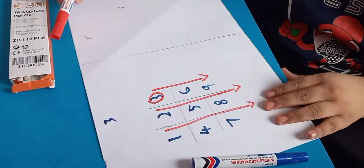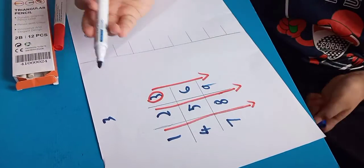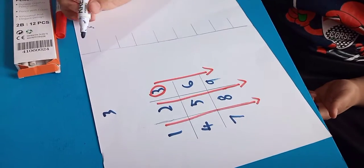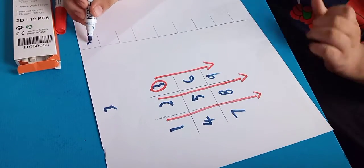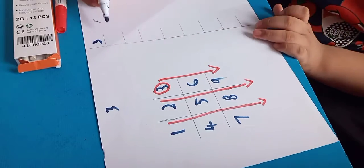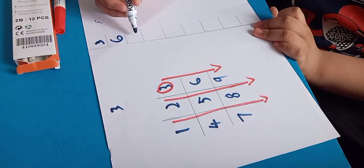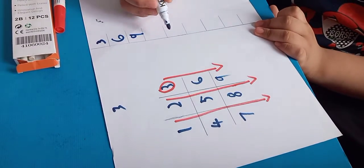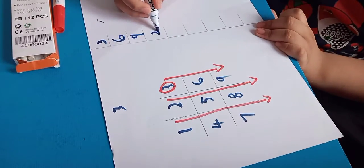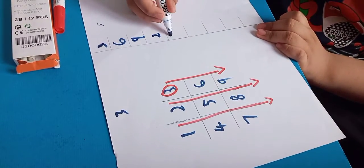List down numbers based on the direction of the arrows. We will write 3, 6, 9. Second arrow: 2, 5, 8.